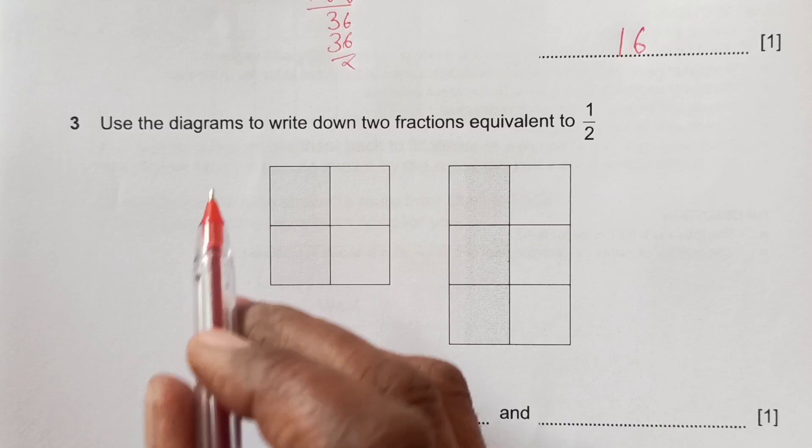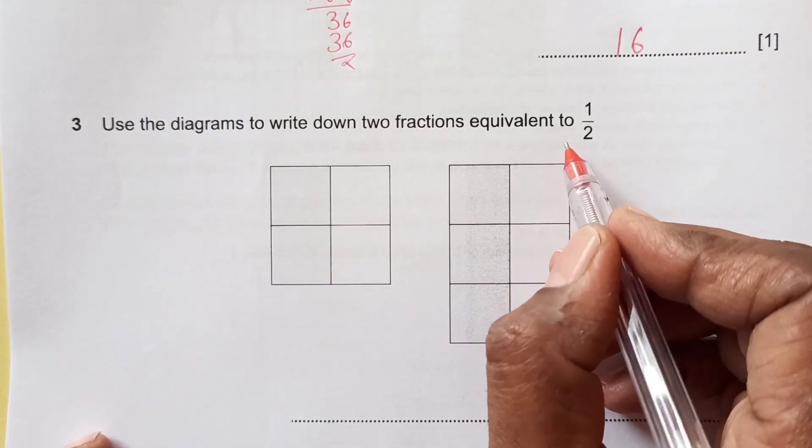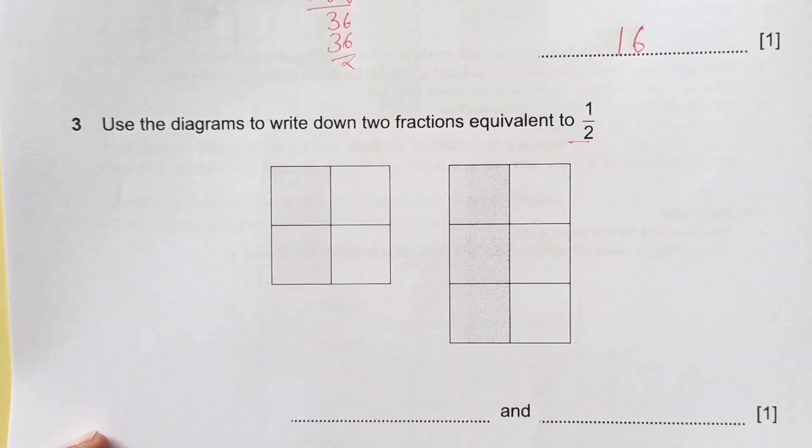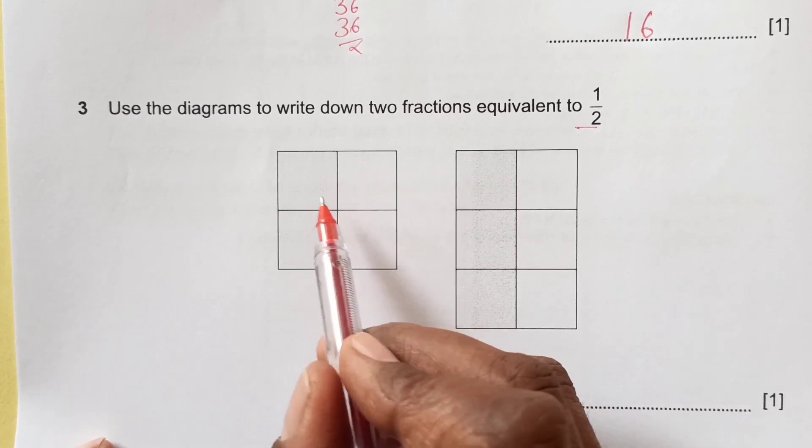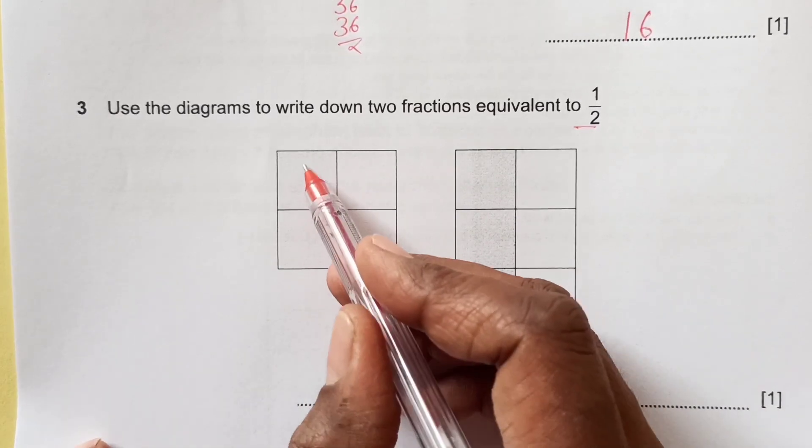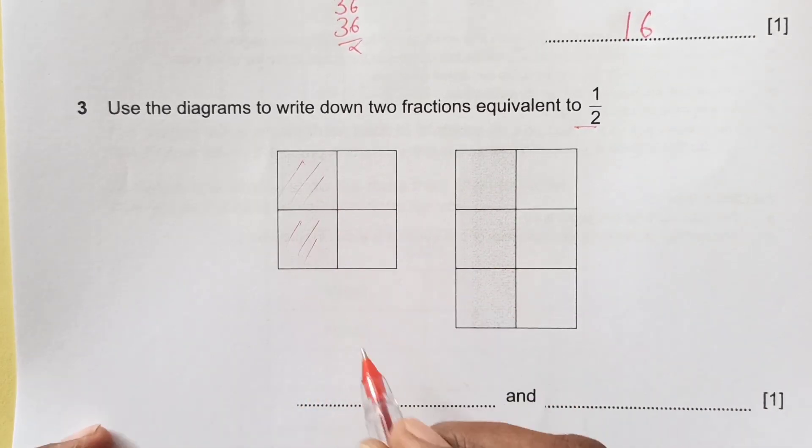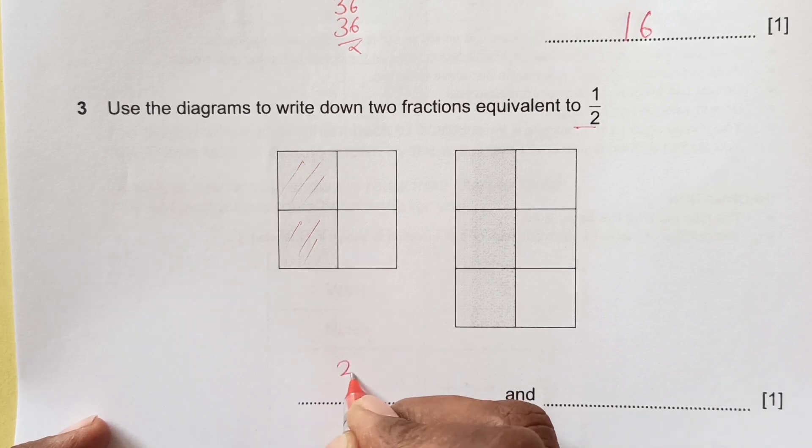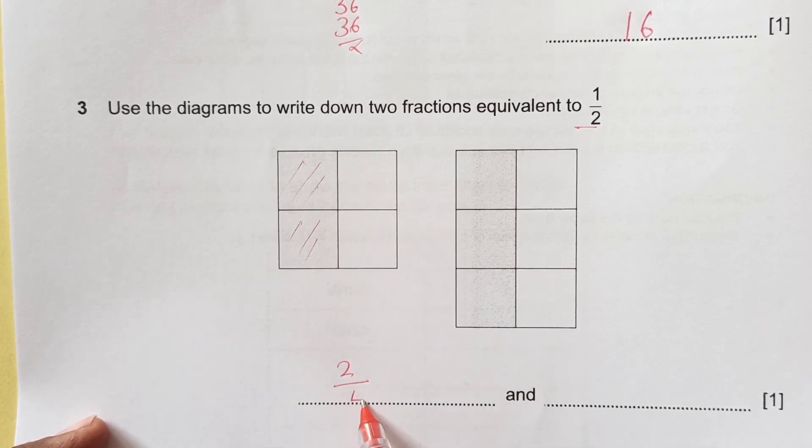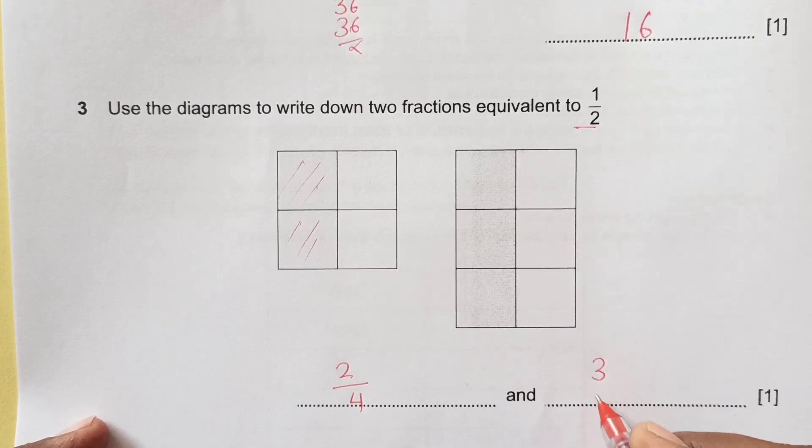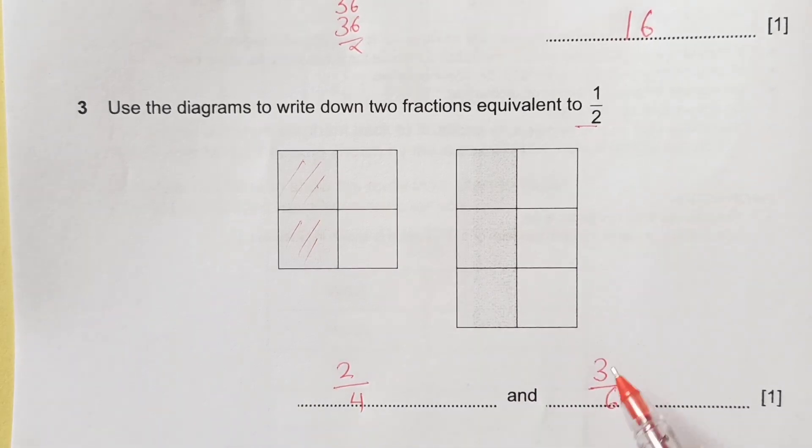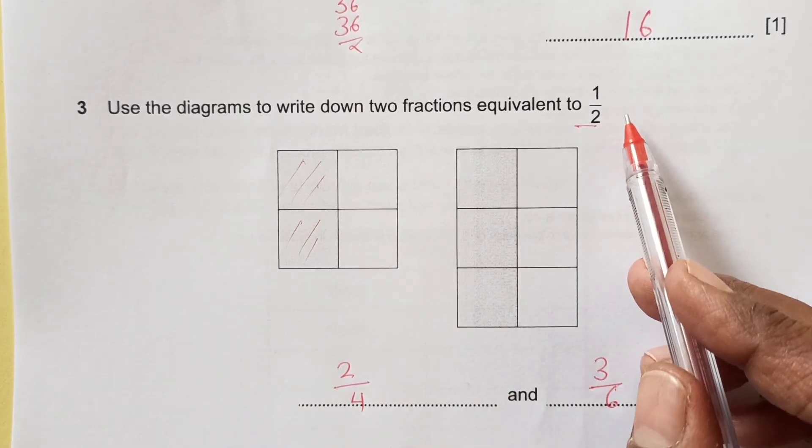Number 3. Use the diagram to show 2 fractions equivalent to 1 over 2. You see here we have the shaded part. That one is 2 shaded out of 4, and here we have 3 parts shaded out of 6. So these 2 are equivalent to 1 over 2.